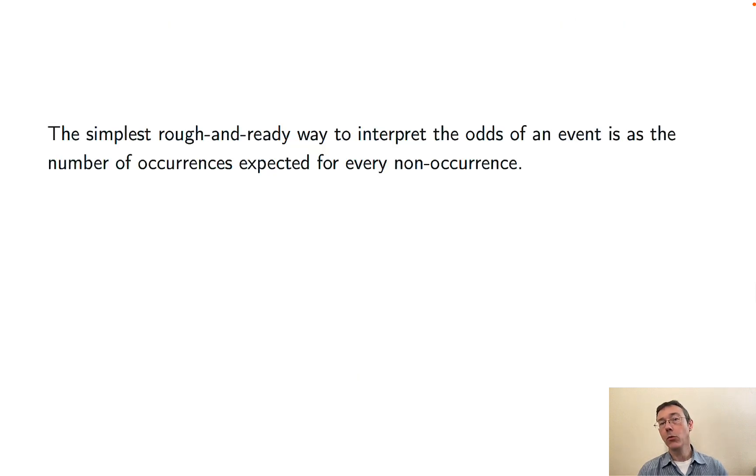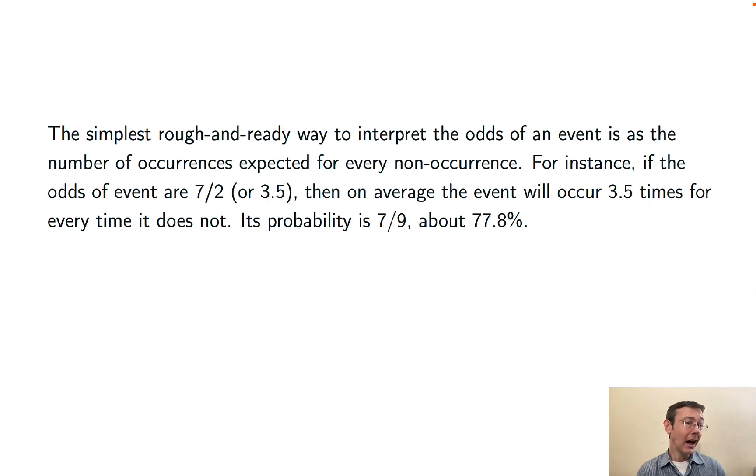The simplest rough and ready way to interpret the odds of an event is as the number of occurrences expected for every non-occurrence. For instance, if the odds of an event are 7 halves, or 3.5, then on average, the event is going to occur 3.5 times for every time that it doesn't.